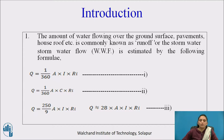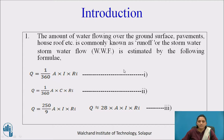The amount of water flowing over the ground surface, pavement, or house is commonly known as runoff or storm water. Storm water flow, also called wet weather flow, is estimated by the following formula.